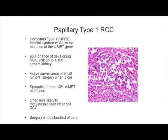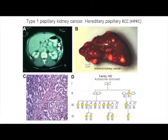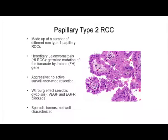In the sporadic tumors, 13% of them will have C-MET mutations, and these are often less likely to metastasize than the clear cell cancer. Surgery is the standard of care, again showing bilateral kidney cancer. It's an autosomal dominant, the hereditary papillary variant.